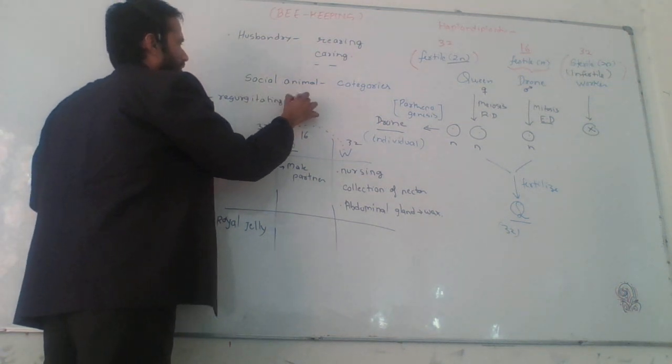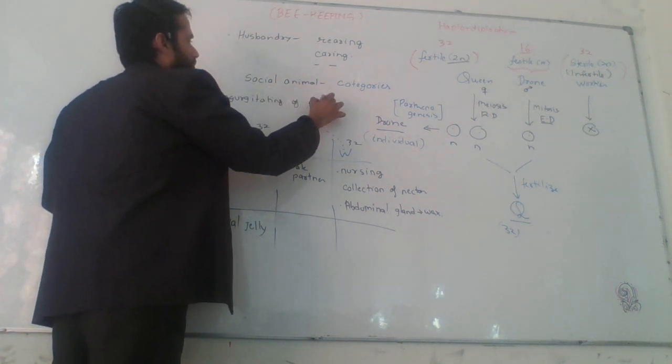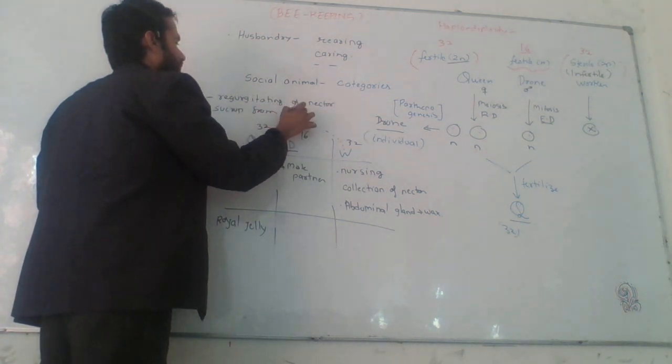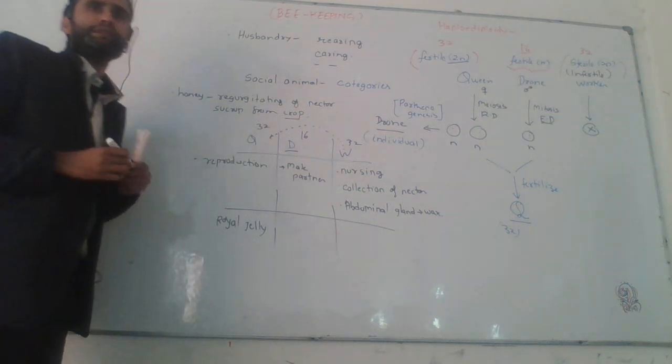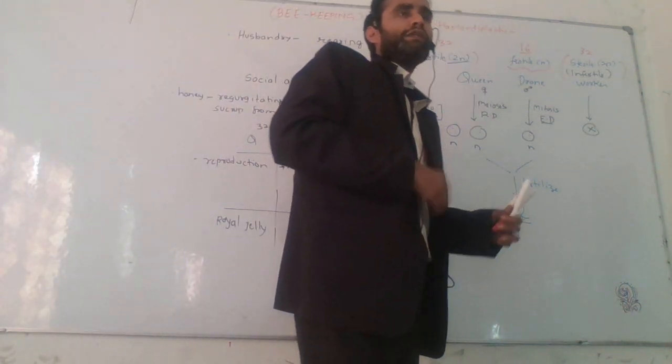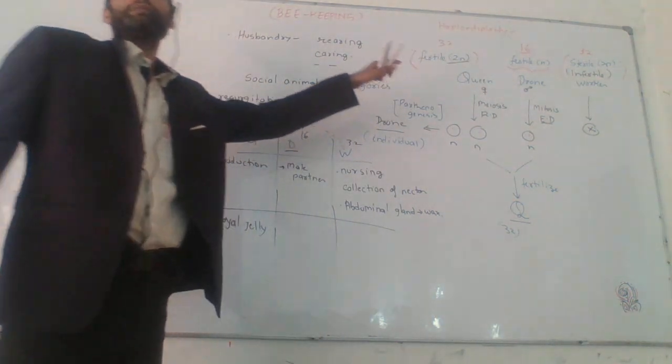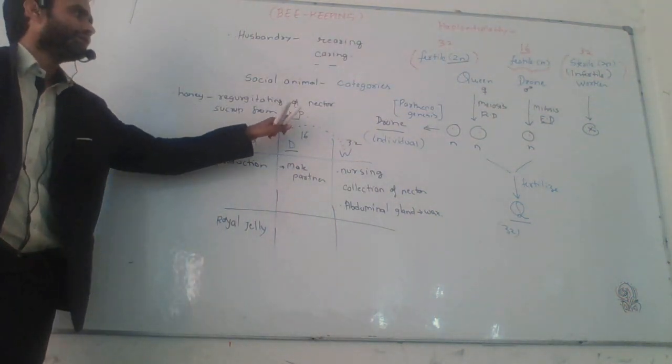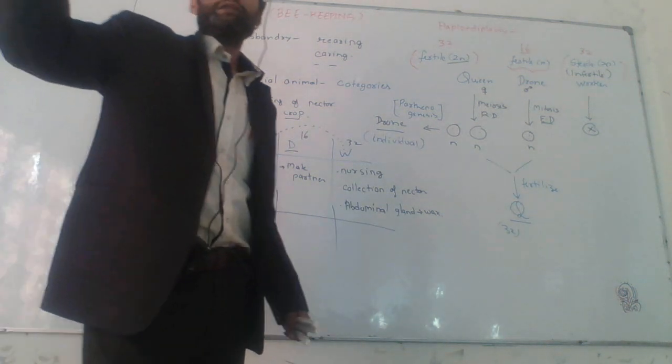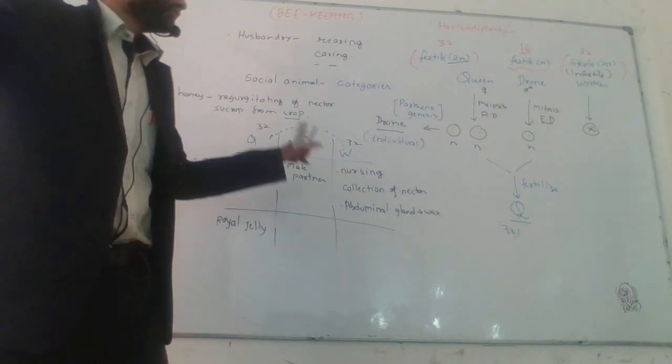Vomiting of nectar sucrose from crop. Crop is the part of the intestine. Crop is found in the cockroach. Crop is found in the birds. Crop is the part of the intestine.